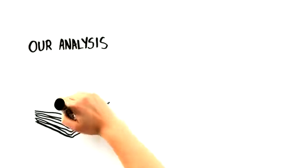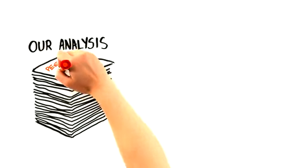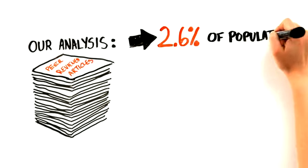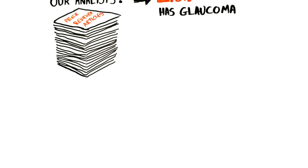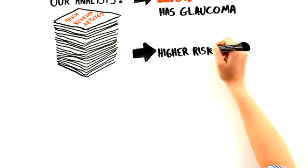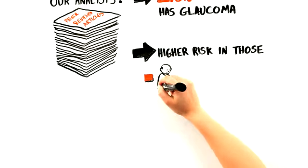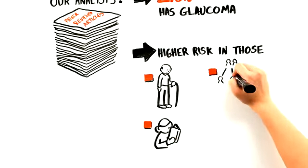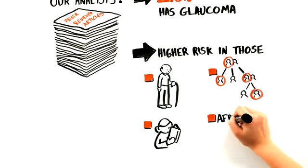Our analysis, based on a synthesis of 50 peer-reviewed articles, shows that 2.6% of the overall population has glaucoma. We also found a higher risk of glaucoma in those over the age of 80, those who are near-sighted, those with a positive family history, and those who are African American.